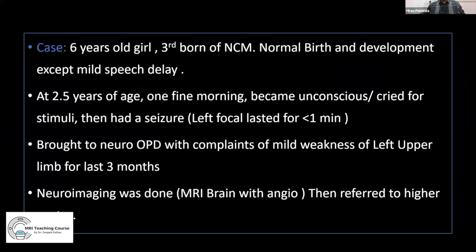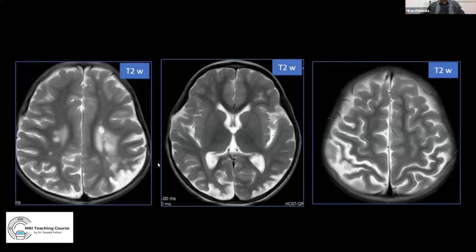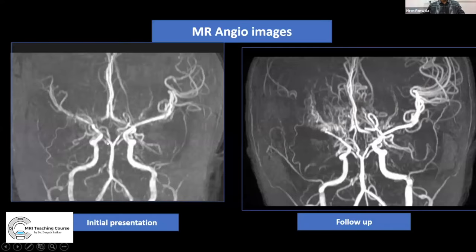A six-year-old girl, third born of a non-consanguineous marriage, had recurrent neurological symptoms: unconscious episodes at 2.5 years and recent left upper limb weakness for three months. T2-weighted axial images showed deep watershed territory chronic infarcts as chronic cavity lesions in the centrum semiovale, with areas of volume loss and T2 hyperintensity in bilateral occipital lobes and right parietal area, indicating recurrent strokes. MR angiogram showed bilateral ICA narrowing with the right MCA appearing smaller in caliber with fewer branches.